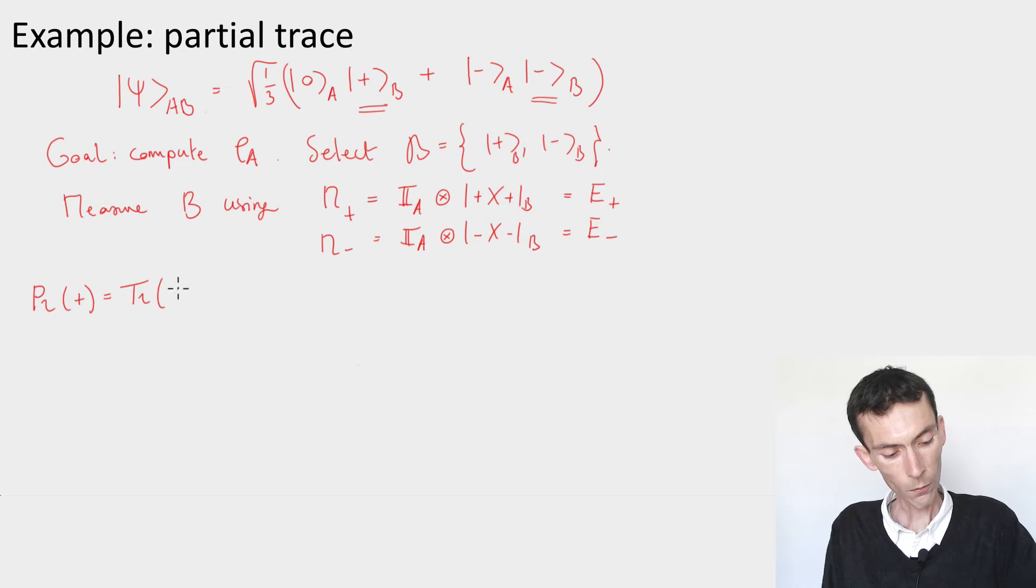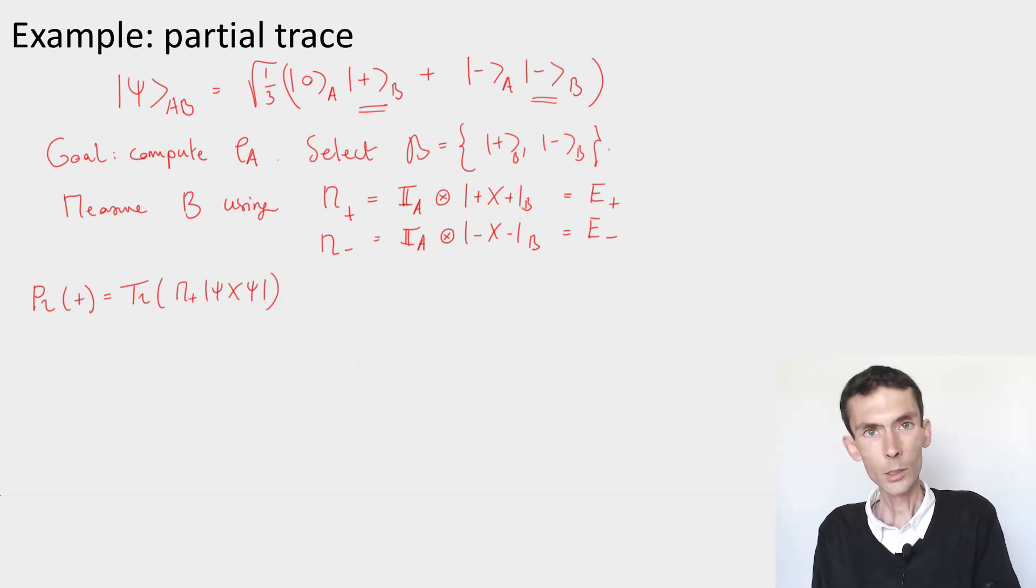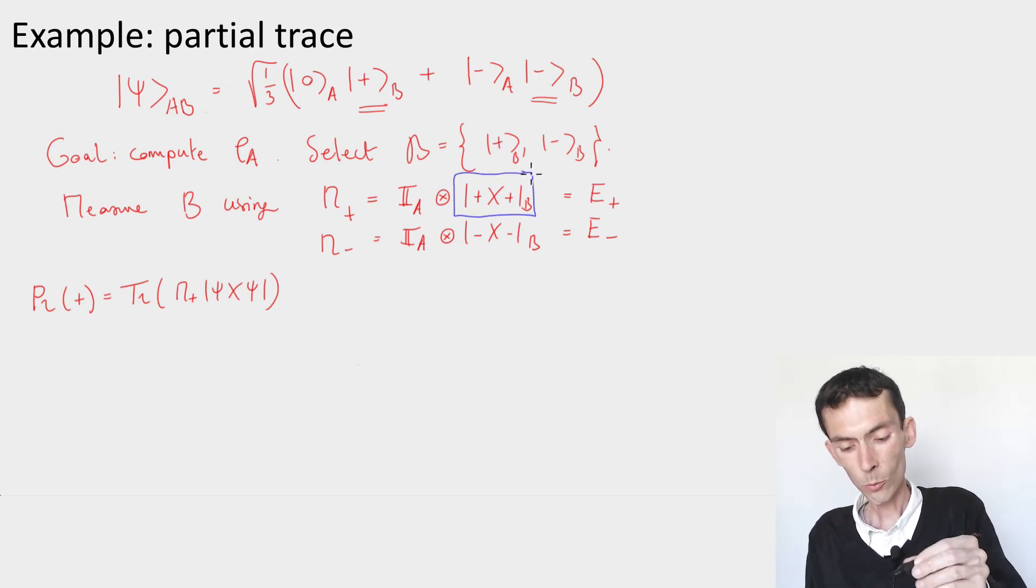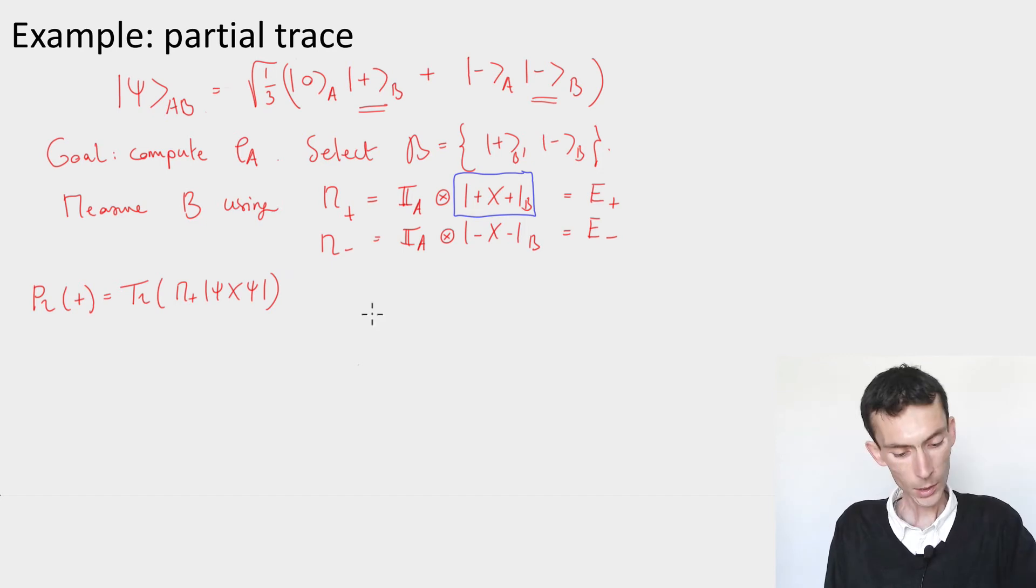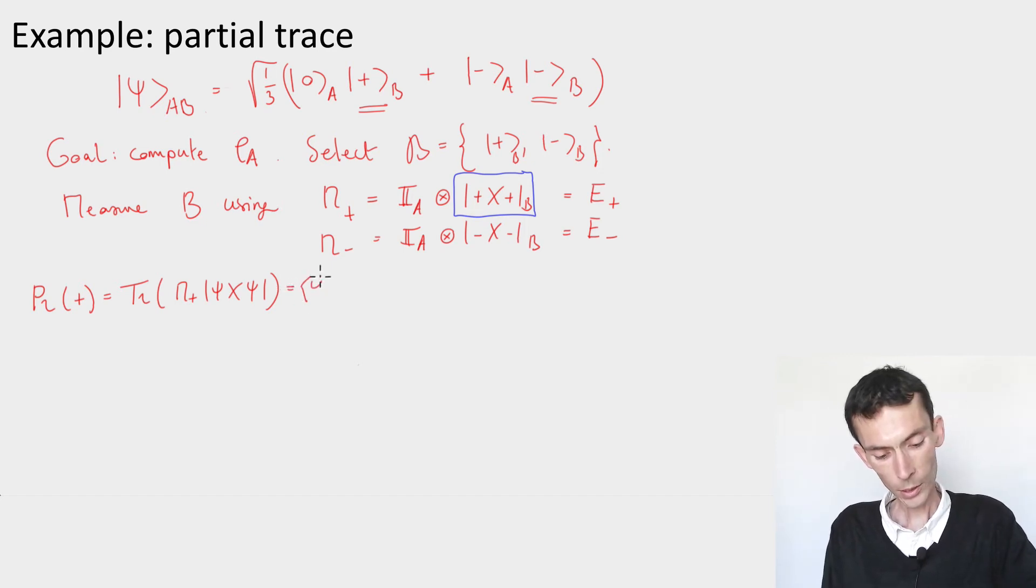So the probability that we obtain a plus, this would be the trace of M plus psi. And you see what M plus does, right? It simply looks at the second qubit, projects it on plus, and on the A system, it does nothing. So when you compute the overlap of psi on M plus, only the plus part is going to stay. And what you'll end up with is probability. This here is going to be equal to psi M plus psi, and you'll get one-third.